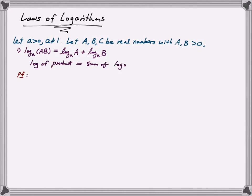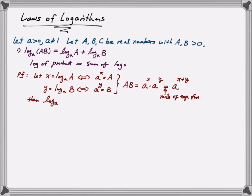I'm going to prove that this rule is true by first letting x equal the log of base a of capital A, and let y be the log of base a of capital B. Then by the rules of the logarithm, I can rewrite the first equation as little a raised to the x equals capital A. Similarly, I can rewrite the second equation as little a raised to y equals capital B. This means I can now write log of base a of A times B as log of base a of a raised to the x plus y, which simplifies to just x plus y. Since x is log base a of A and y is log base a of B, we have the log of a product is equal to the sum of the logs.